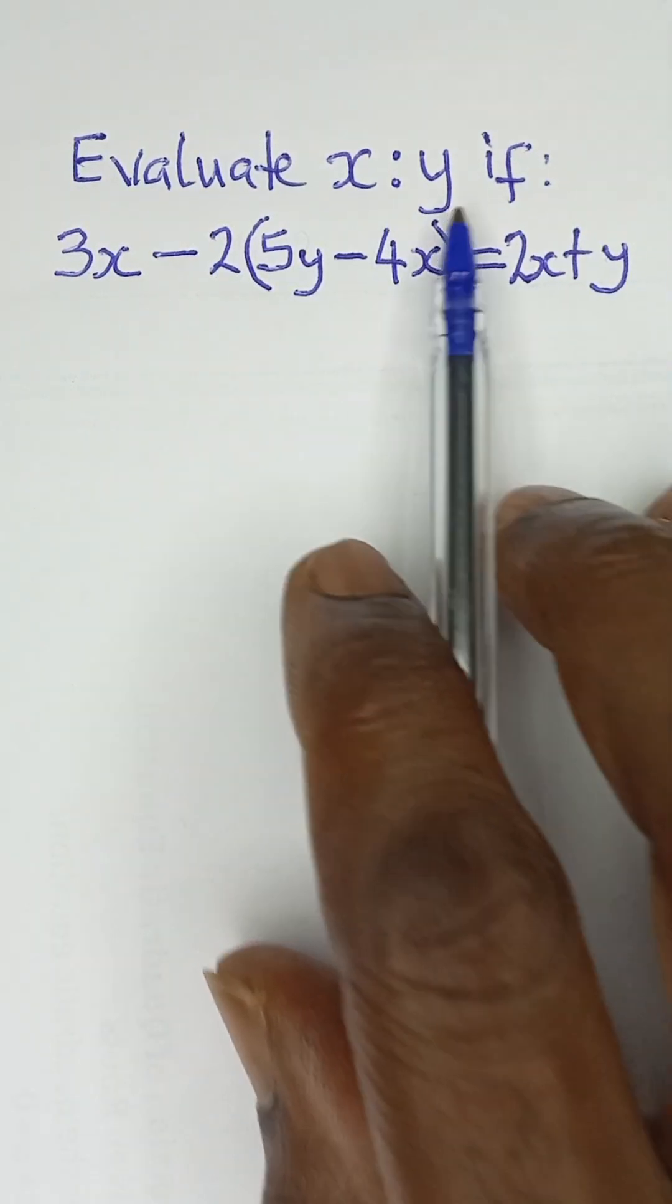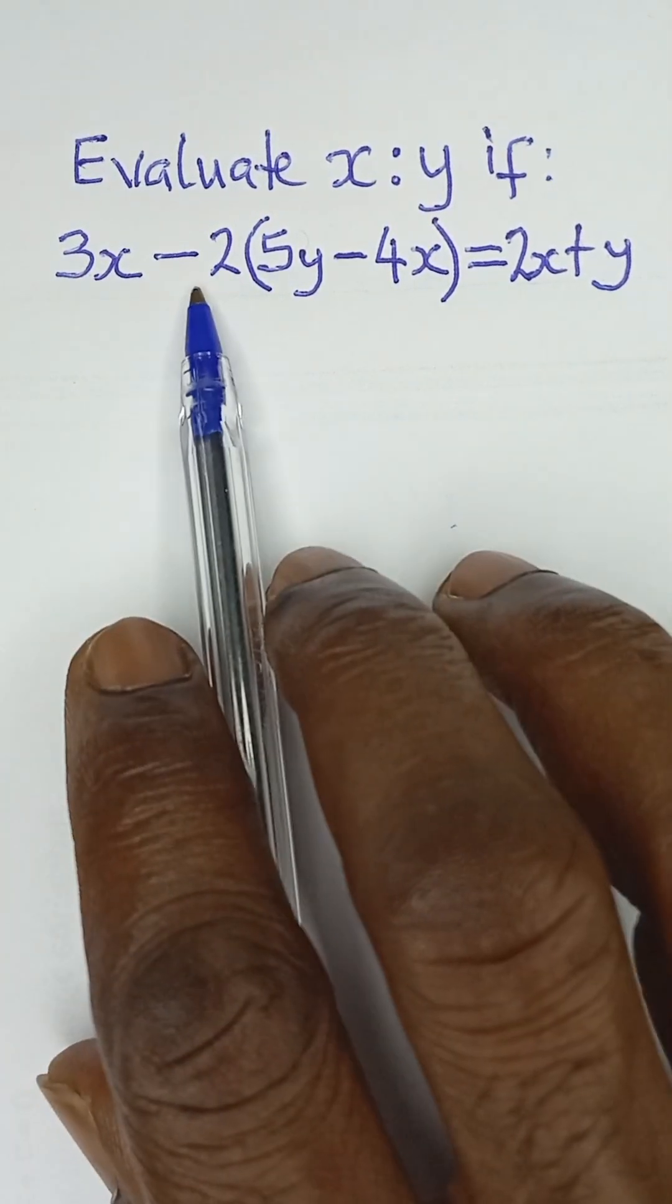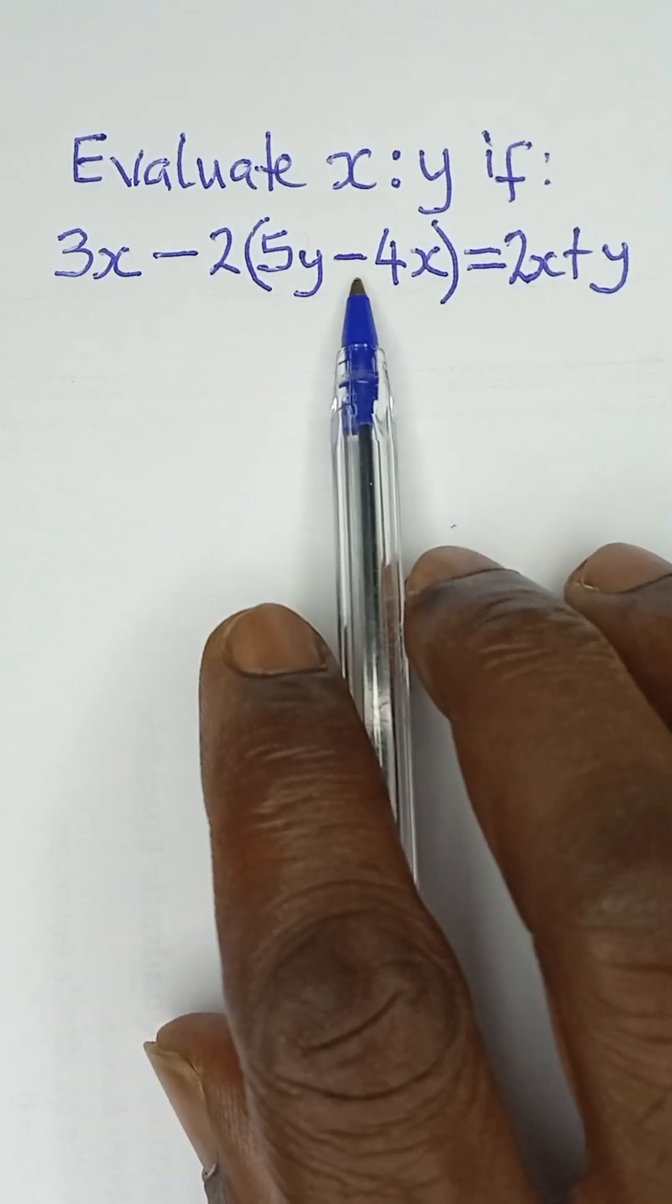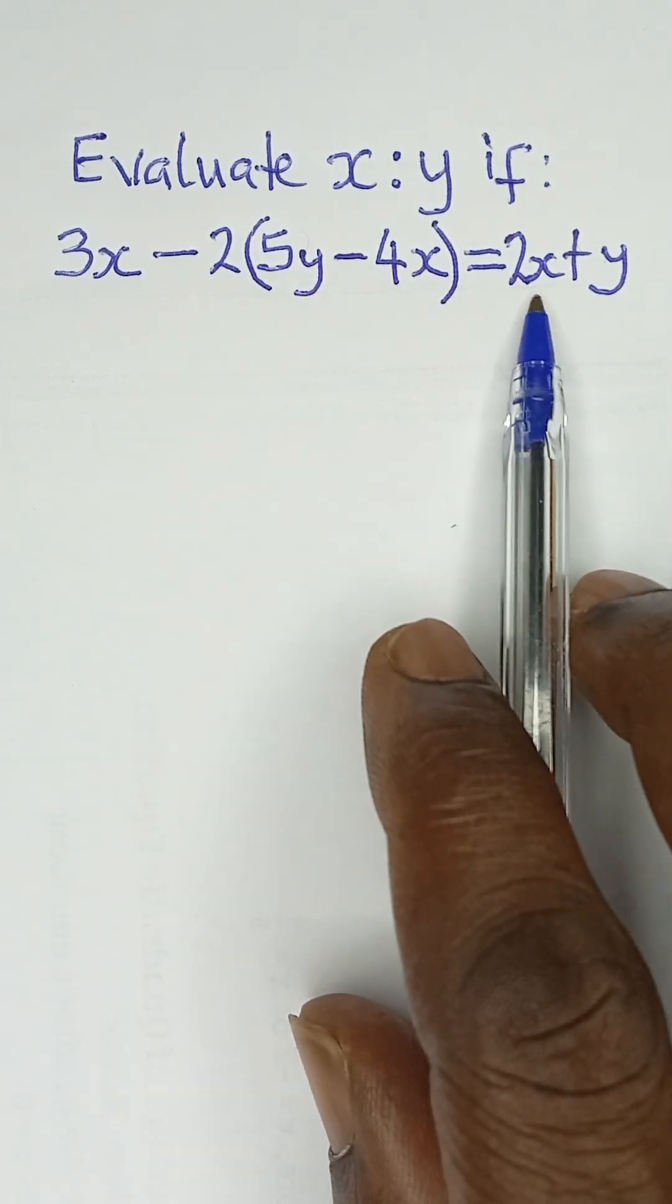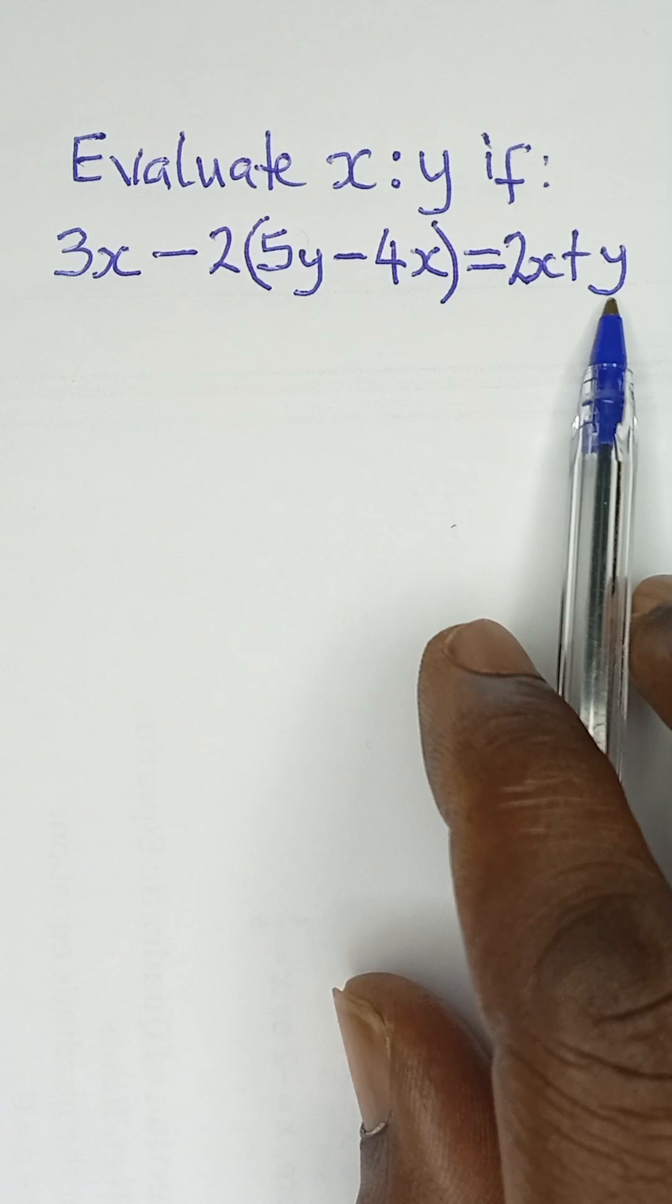Evaluate x ratio y if 3x minus 2 bracket 5y minus 4x bracket close is equal to 2x plus y.